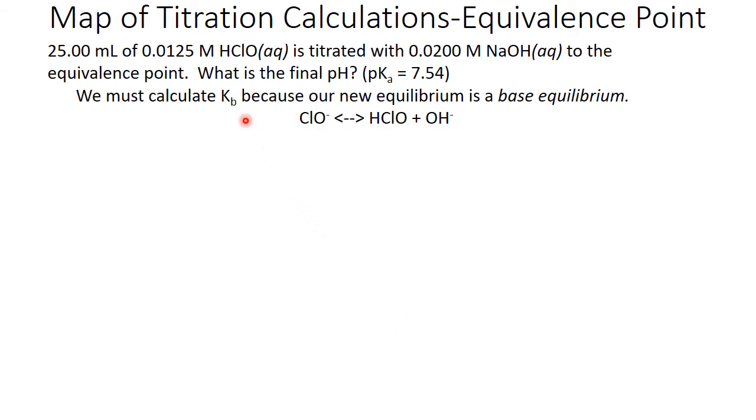Next, we have to calculate a Kb, because our new equilibrium is a base equilibrium. That ClO- is going to react with liquid water to reversibly become HClO, its conjugate acid, and hydroxide ion. To convert our pKa to a Ka, we're going to turn that pKa value into an exponent of 10. So 10 to the minus 7.54 equals 2.900 times 10 to the minus eighth. Ka times Kb equals Kw, the special K value for water. We can rearrange this to tell us that Kw divided by Ka equals Kb. So in this case, our Kb is 3.45 times 10 to the minus seventh.